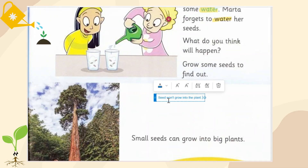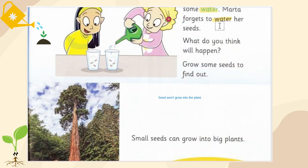Plants require sufficient water and sunlight to grow into a healthy big tree. When you don't give them water, the seeds will not grow into the plant and will be dead. So if Martha forgets to water her seeds, they will not grow into a plant or into a tree.